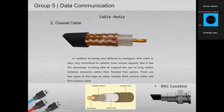Number two is coaxial cable. You will most likely use coaxial cables for the connection from your internet service provider to your modem. The coaxial cable powers that connection, providing your computer and network with internet access. Many people use coaxial cable because their shielded design lets the center conductor quickly transmit data while being protected from damage and interruptions. This cable is very difficult to configure but is very resistant to attacks from certain signals. It has the advantage of supporting the use of long cables between networks rather than twisted pair cables. There are two types: thick coaxial cable and thin coaxial cable.